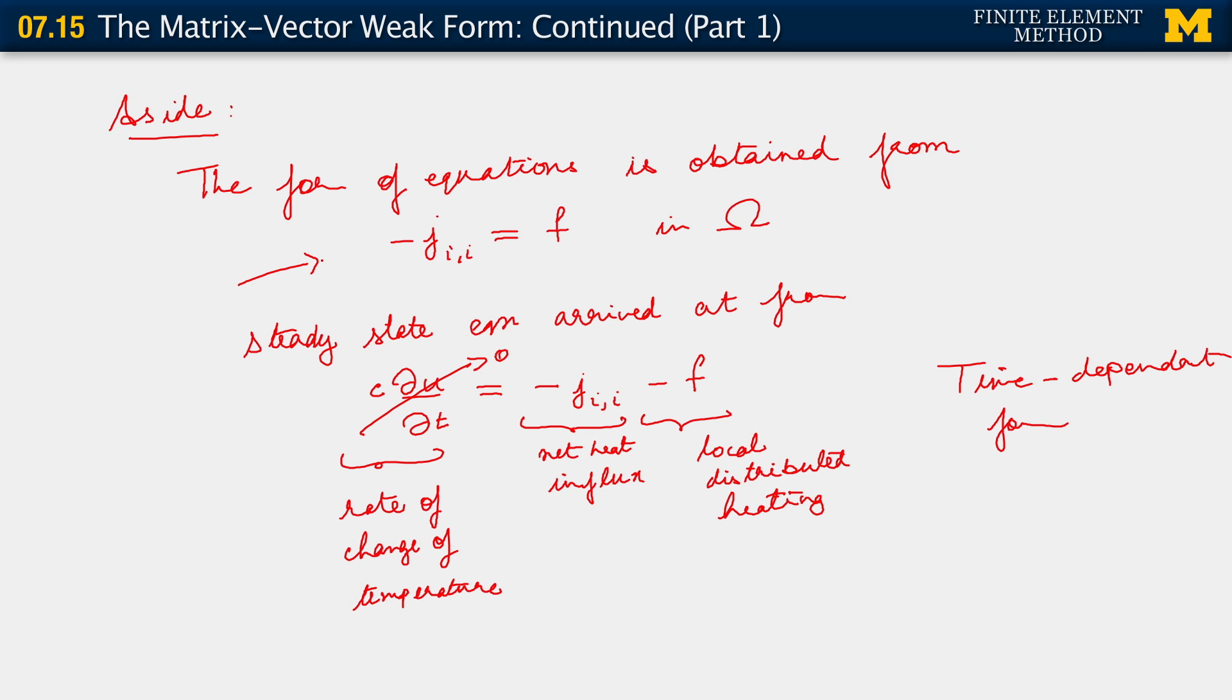But you observe that when viewed in the larger setting of a time-dependent or a transient problem, the local distributed heating, or alternatively, if you're looking at a diffusion problem, the local supply of mass, for the way we're writing things out, is properly minus f. It's just a matter of the way we took the signs when we started out with the PDE in this form.